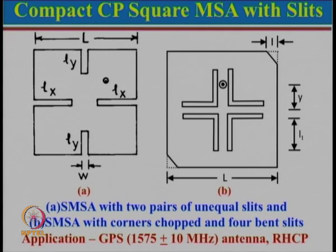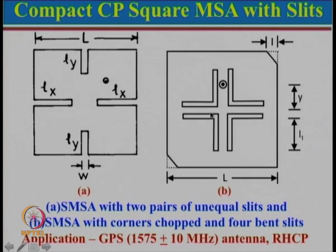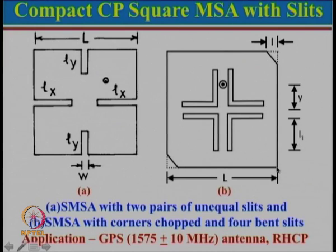Here is another fairly compact configuration. Without the internal slots, one dimension would be one length and the other would be different, with the feed placed between the two diagonals for circular polarization. By cutting four slots symmetrically, the path length is no longer straight from one side to the other — it goes around the slots — so path length increases significantly and resonance frequency reduces. Again, variations are possible: square patch with notches of lengths L1 and L2.